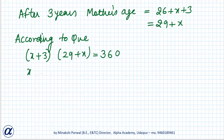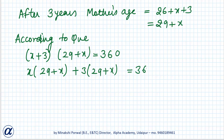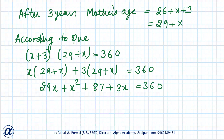Expanding (x plus 3) into (x plus 29) equals 360: x² plus 29x plus 3x plus 87 equals 360. Rearranging: x² plus 32x plus 87 minus 360 equals 0, giving x² plus 32x minus 273 equals 0. This is the final quadratic equation for Rohan's age problem.